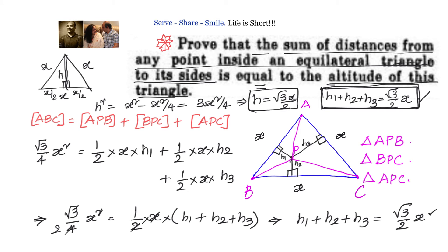Let us recap. We have an equilateral triangle ABC with a point P inside the triangle. We need to prove that the distances from P to AB, BC, and AC sum to the altitude. We know the distance between a point and a line is always the perpendicular distance, so we drop perpendiculars to each side. Dividing ABC into three triangles and using half times base times height for each, their areas sum to the area of ABC, which is root 3 by 4 into x squared. Simplifying, we prove that h1 plus h2 plus h3 equals root 3x by 2, the altitude of the triangle.